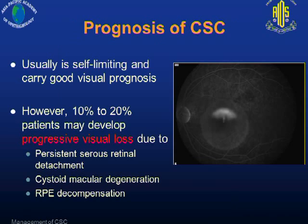Without treatment, the prognosis is generally quite good. Usually the disease is self-limiting and the fluid will absorb in about three to four months. But in a lot of cases, these patients can develop recurrences, and in around 10 to 20% of patients, they can develop progressive visual loss due to persistent serous retinal detachment, cystoid macular degeneration, or RPE decompensation.